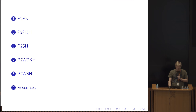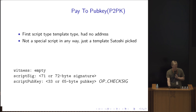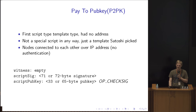You've already seen these templates; going to go through a few more facts and ideas. Pay-to-pub-key was actually the first script template type. It had no address format at all — it doesn't exist. It's not a special script, not evaluated in a special way, just a template — the obvious template Satoshi picked. Nodes would connect to each other over IP address with no authentication, and you'd get this script directly from the payee and then pay to that person. Obviously insecure.